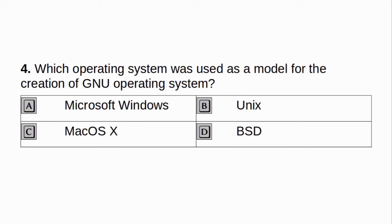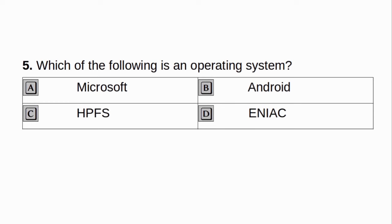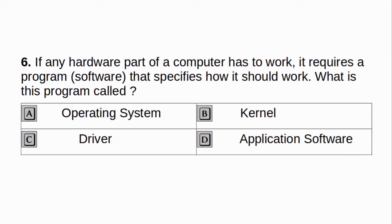Which operating system was used as a model for the creation of GNU operating system? a. Microsoft Windows. b. Unix. c. Mac OS X. d. VSD. Answer: b. Unix. Which of the following is an operating system? a. Microsoft Windows. b. Android. c. HPFS. d. Enyaq. Answer: b. Android.